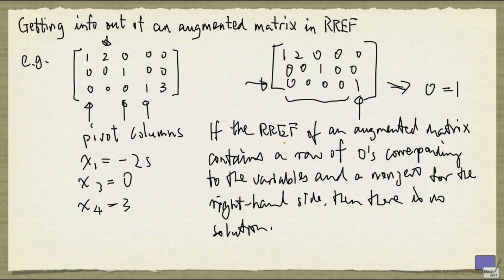So, if the reduced row echelon form of an augmented matrix contains a row of zeros corresponding to the variables, and a non-zero for the right-hand side, then there is no solution, as we have seen up here.